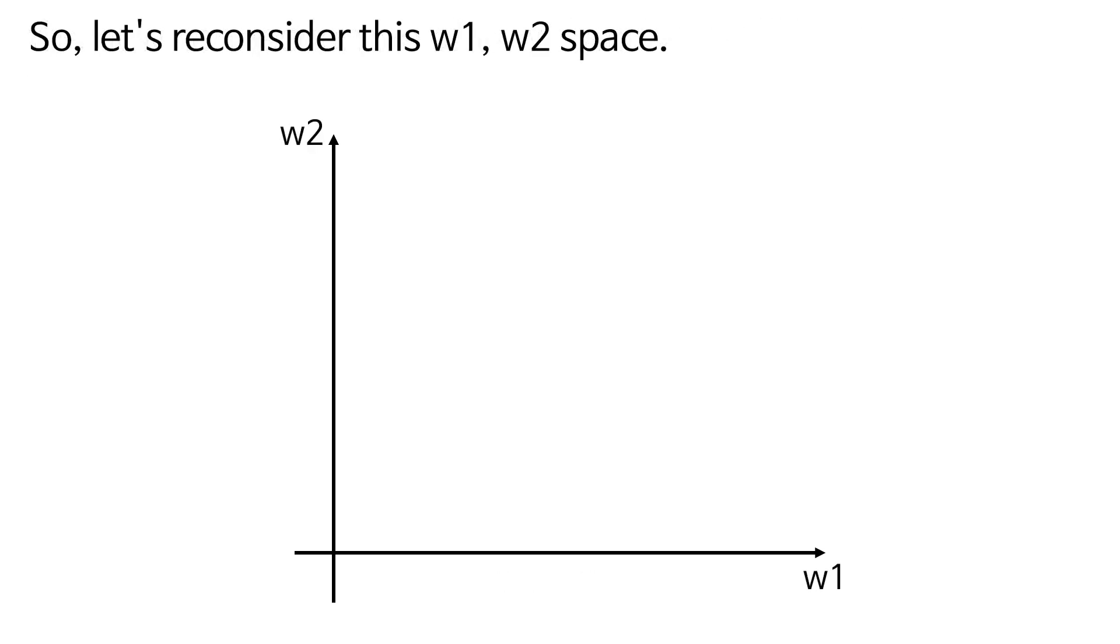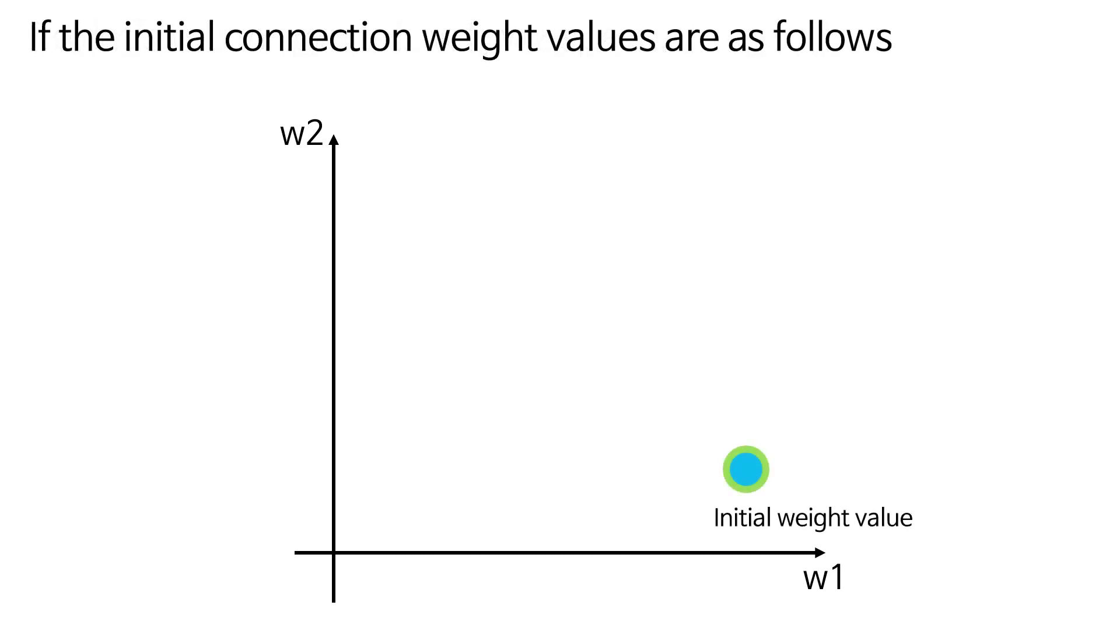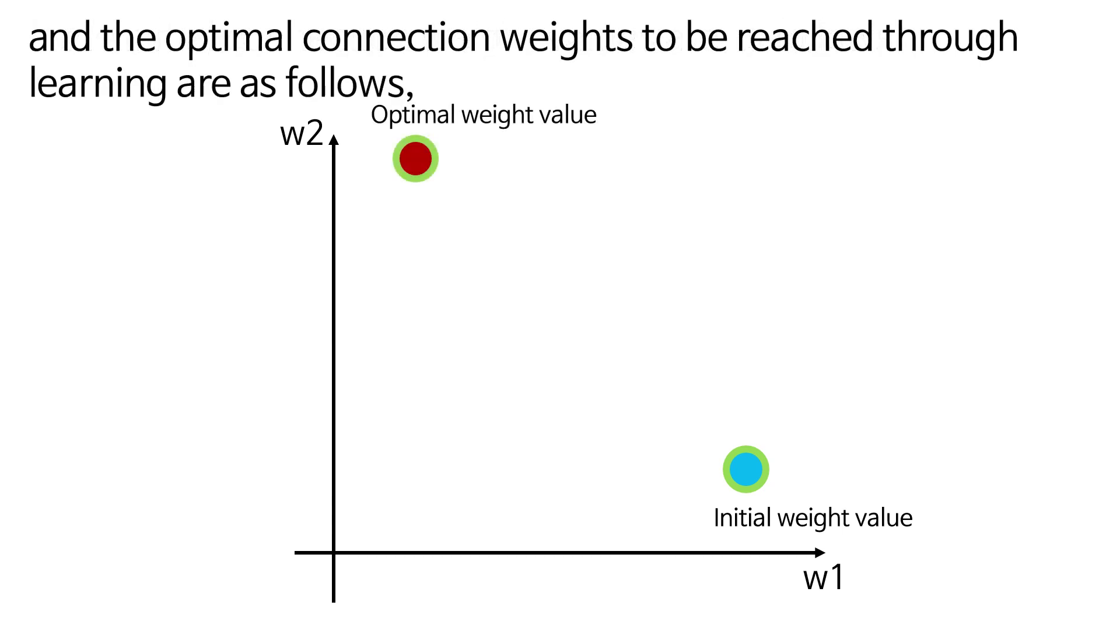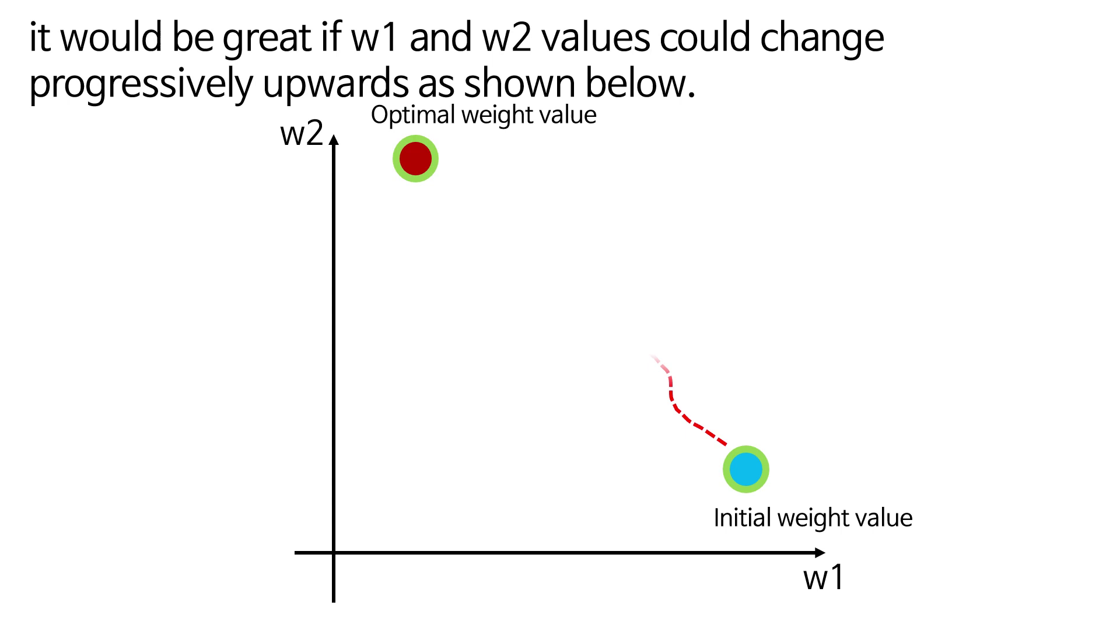So, let's reconsider this W1, W2 space. If the initial connection weight values are as follows and the optimal connection weights to be reached through learning are as follows, it would be great if W1 and W2 values could change progressively upwards as shown below.